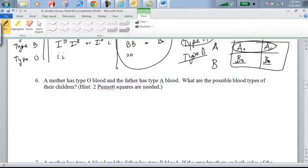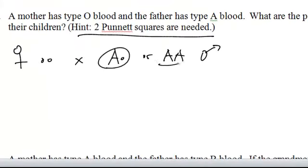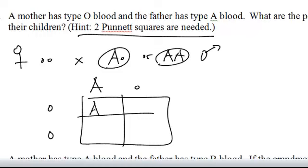Let's look at problem six really quickly here. A mother has type O blood and the father has type A blood. So that means mom is OO, and dad is either AO or AA. We don't know yet. What are the possible blood types of their children? Well, we need to do two Punnett squares because dad's got two possible genotypes. So let's put mom's gamete possibilities over here, dad's gamete possibilities on top of the square, and as you can see in this situation, half the kids would have type A blood and half the kids would have type O blood.